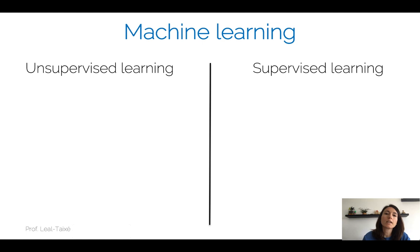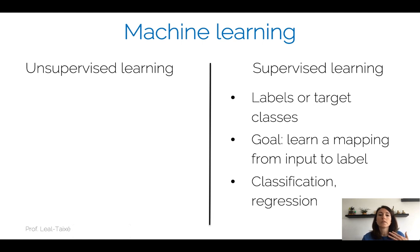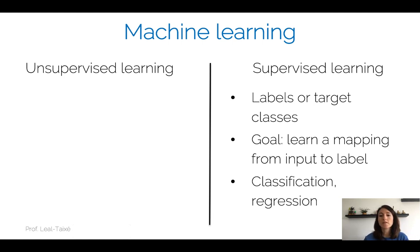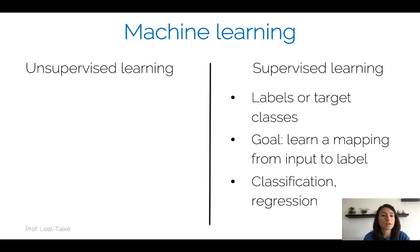We start by looking at the two paradigms in machine learning. One is supervised learning, the one that you are most familiar with, covered at I2DL and also here at ADL4CV. This is where you have the labels or the target classes for your particular task, and your goal is to learn a mapping from the input — for example, images — to the labels, whether those are detection or classification labels for semantic classes, or continuous values for a regression problem.